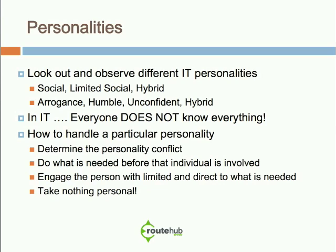Another important point: in information technology, no matter how social or arrogant someone may come off, everyone does not know everything. You may think, 'wow, they know a lot — maybe they're right and I'm wrong.' But they do not know everything, because there are so many branches that go deeper and deeper. I've worked in government networks with very smart people. A systems engineer will tell you everything about Active Directory and Linux infrastructures, but if I ask them about VLANs, they don't know that — and they won't really tell you. Just watch out for these personalities.